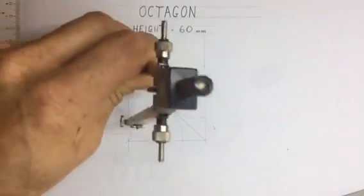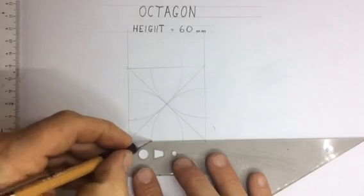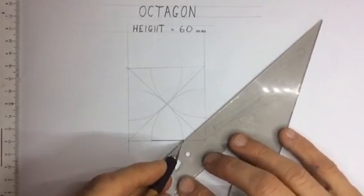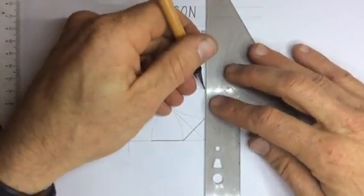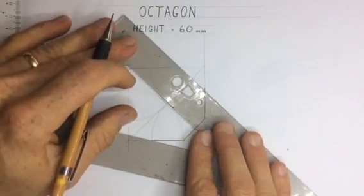If you've drawn accurately, all of those arcs will go exactly through the middle. And once you've done that, you can then draw lines going to those points over there, getting you a perfect octagon.